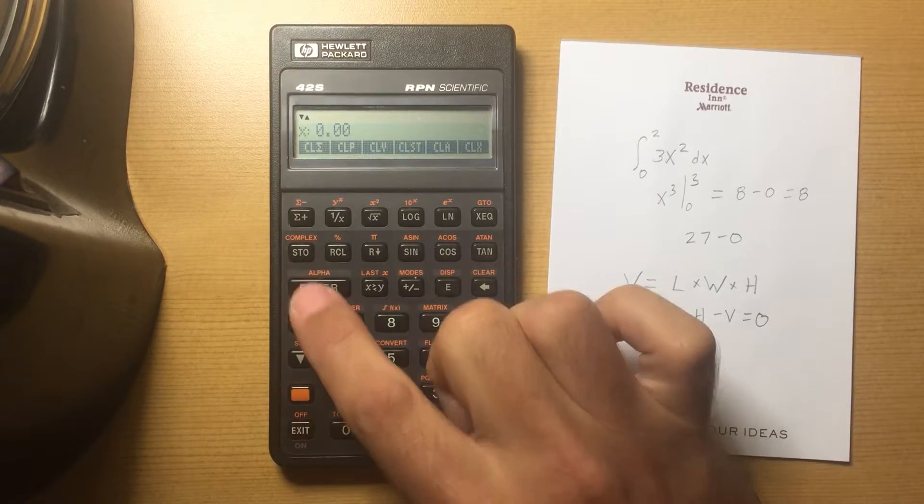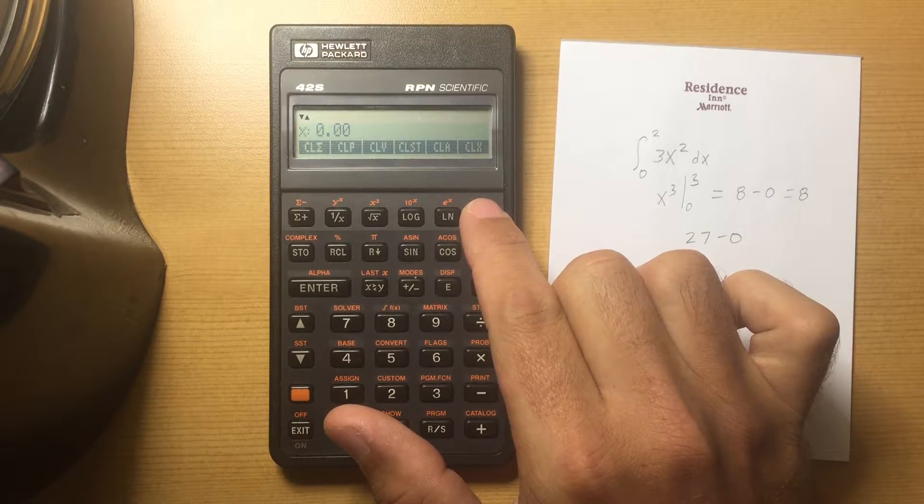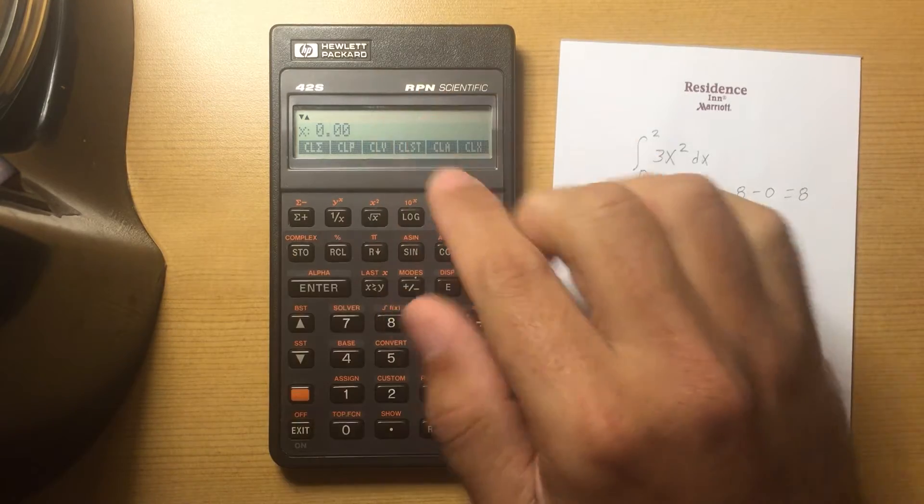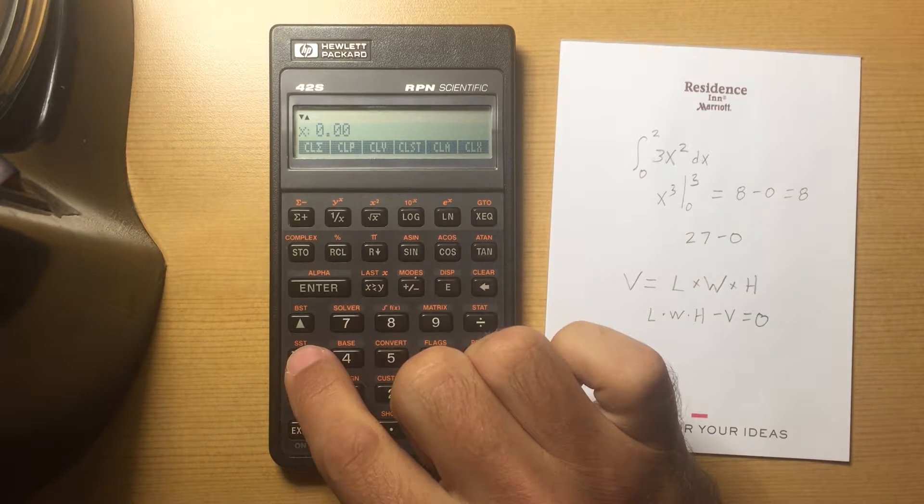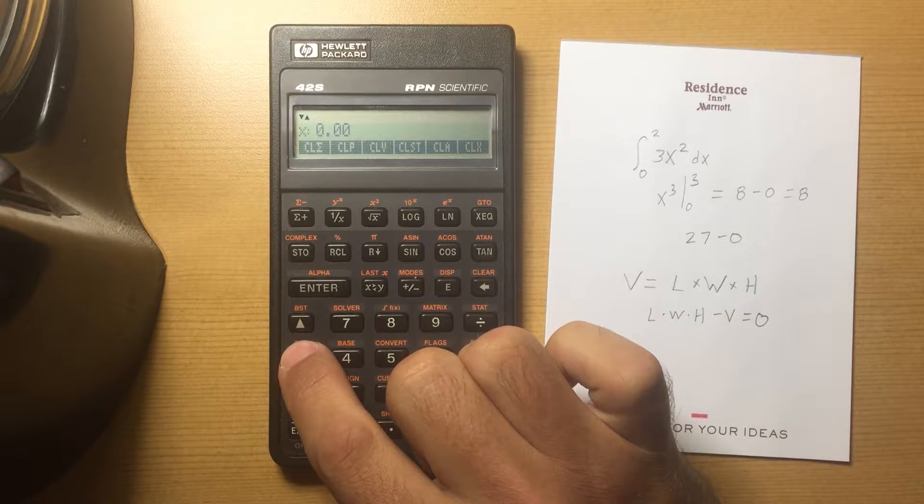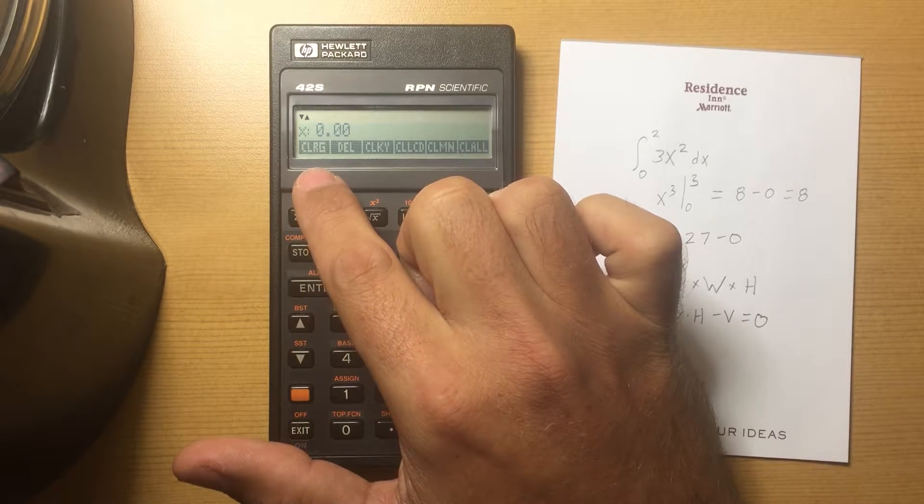CLA is Clear the Alpha Register. So if you have things stored in your alpha register, that's shift alpha, you can clear it. CLX is Clear the X Register. So instead of clearing the whole stack, you just want to clear the X register, and that would be more useful in programs.